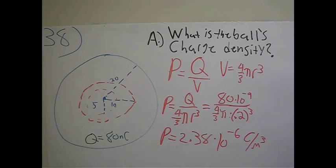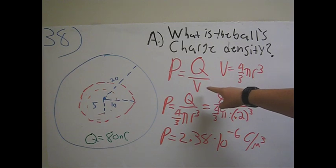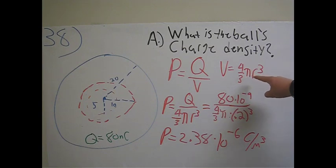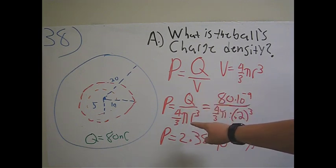The formula for charge density is ρ equals Q divided by V. And since we're dealing with a ball, V is equal to 4/3 π r³. Substituting in, we have ρ equals Q divided by 4/3 π r³.